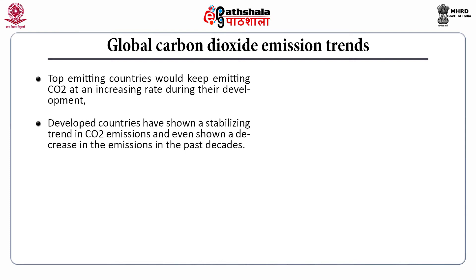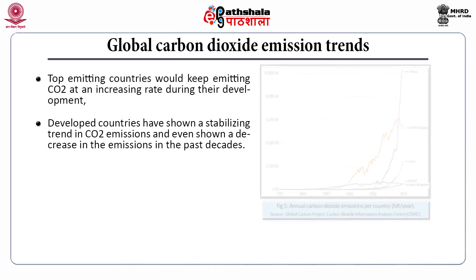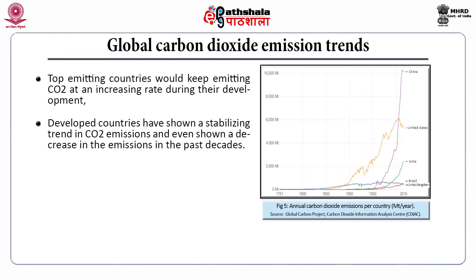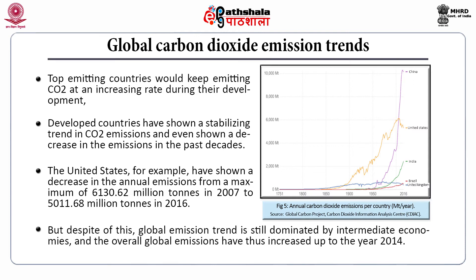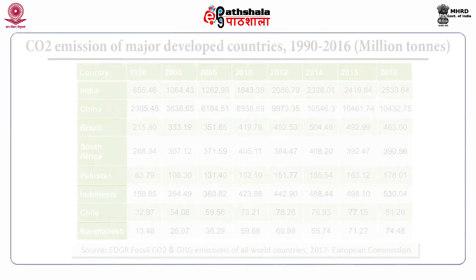Developed countries have shown a stabilizing trend in carbon dioxide emission and even show a decrease in emission in the past decades. Still, developed countries are emitting more carbon dioxide than developing countries. The United States, for example, showed a decrease in annual emission from a maximum of 6,130 million tons in 2007 to 5,011 million tons in 2016. Despite this, the global emission trend is still dominated by intermediate economies, and overall global emissions increased up to 2014 before starting to decrease.